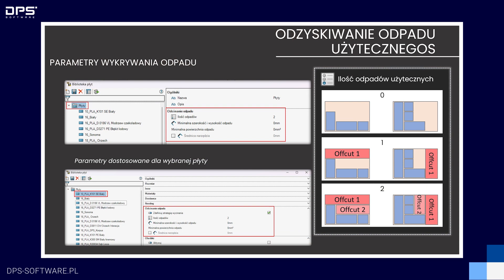Sposób, w jaki odpad będzie dzielony i wydzielany podczas Nestingu, definiujemy widocznymi parametrami. Możemy określić przede wszystkim ilość odpadów użytecznych: ustawiając ten parametr na zero, nie będziemy wydzielać żadnego odpadu; ustawiając na jeden — zostanie wydzielona jedna prostokątna płyta; ustawiając na dwa — będziemy mieli dwa wydzielone elementy, jeżeli pozwoli na to aktualny układ na płycie. Oprócz tego mamy parametry minimalnej szerokości i wysokości odpadu oraz minimalnej powierzchni odpadu, określające minimum pozwalające na wykrycie takiego odpadu.